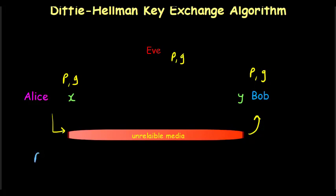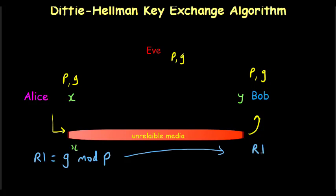R1 is calculated as G raised to X, mod P — where X was Alice's private number known only to her. This value R1 is then shared by Alice with Bob through the unreliable media, so Eve can also access R1.